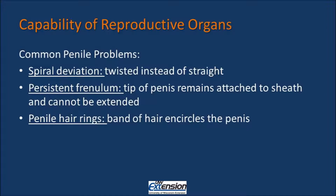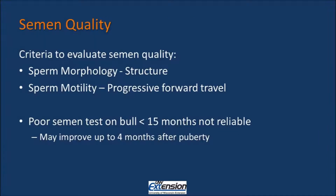Some other issues that can affect the penis are fractures, warts, and scarring from previous injuries. Semen quality is also important to evaluate. When we look at semen quality, we're looking at both sperm morphology and sperm motility. Morphology refers to the structure of the sperm, while motility refers to the progressive forward travel of the sperm.